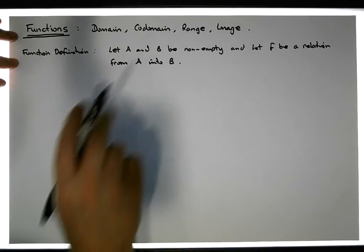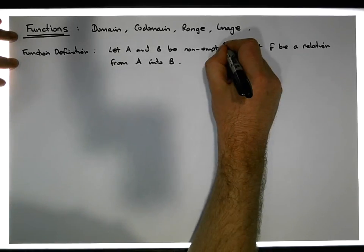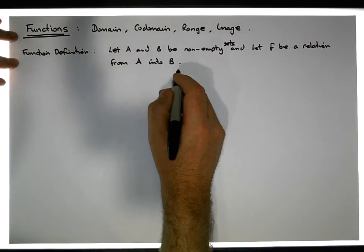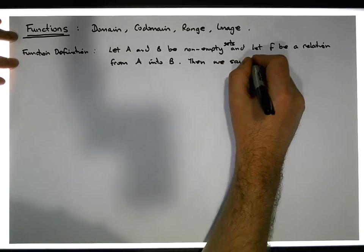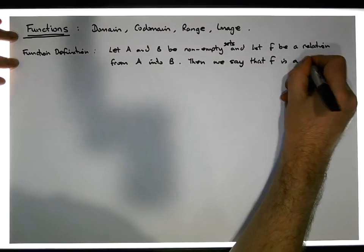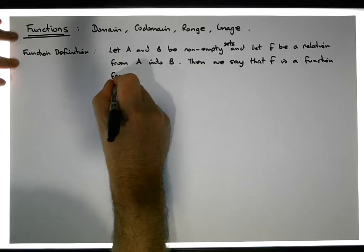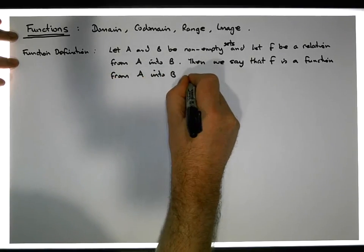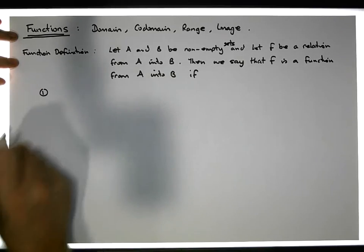So let A and B be non-empty sets, and let f be a relation from A into B. Then we say that f is a function—that's the key word—a function from A into B, if the following two conditions hold.